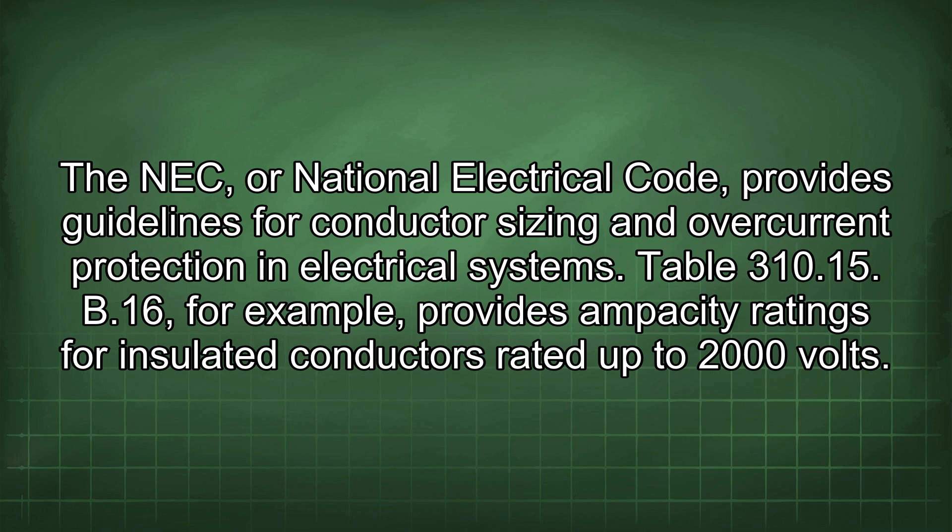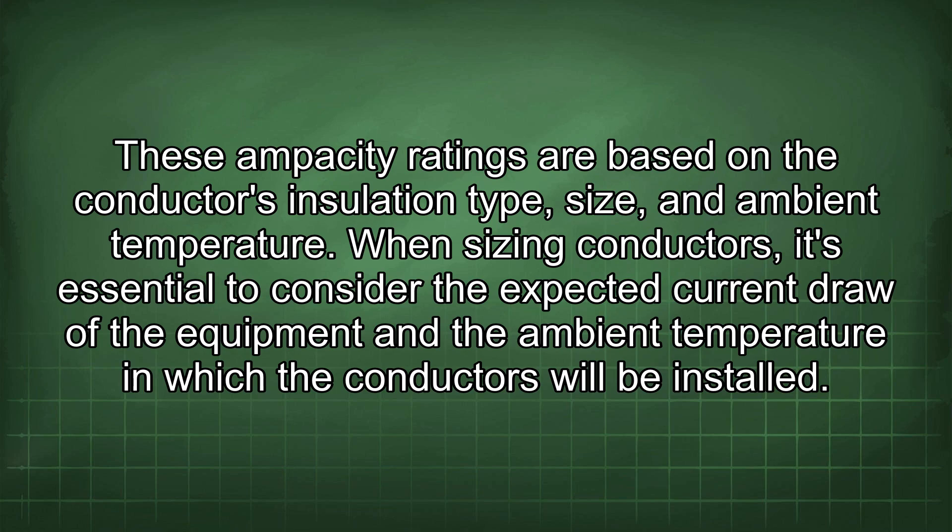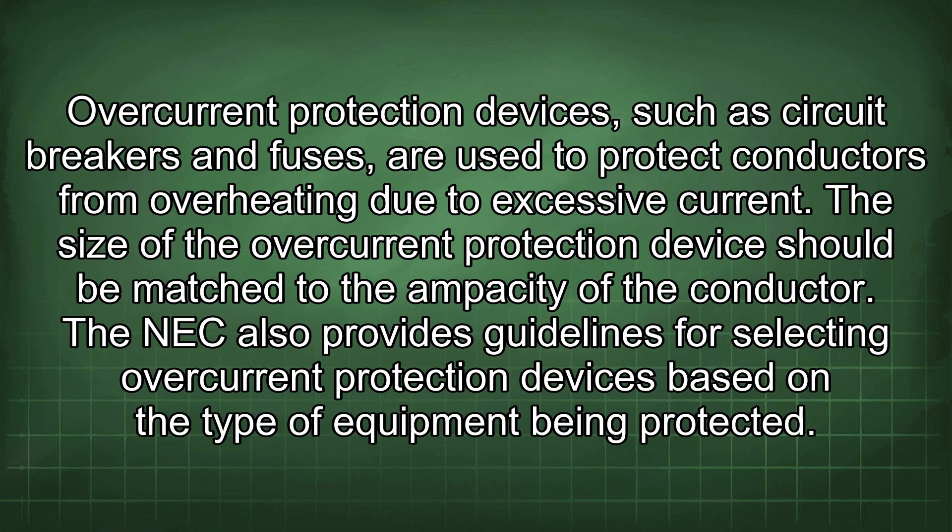The NEC, or National Electrical Code, provides guidelines for conductor sizing and overcurrent protection in electrical systems. Table 310.15(B)(16), for example, provides ampacity ratings for insulated conductors rated up to 2000 volts, based on the conductor's insulation type, size, and ambient temperature. When sizing conductors, it's essential to consider the expected current draw of the equipment and the ambient temperature. Overcurrent protection devices, such as circuit breakers and fuses, are used to protect conductors from overheating due to excessive current, and their size should be matched to the ampacity of the conductor.